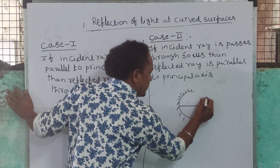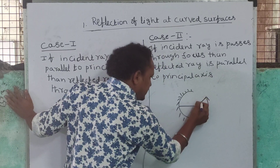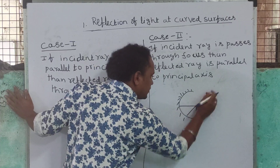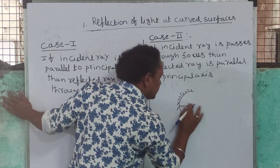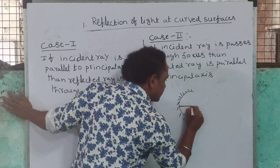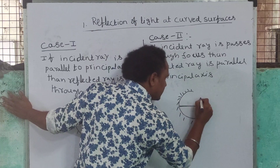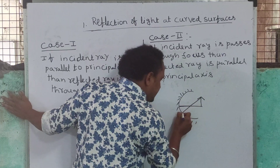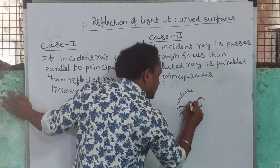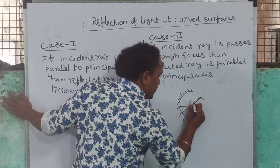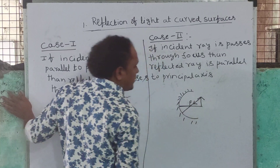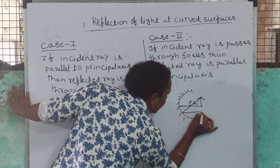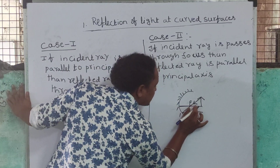In the diagram, the incident ray is passing through the focus. Then the reflected ray is parallel to the principal axis.